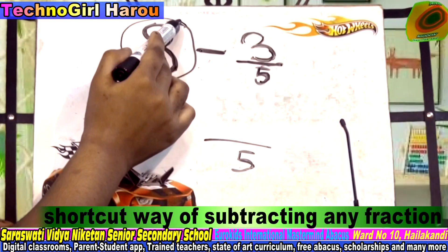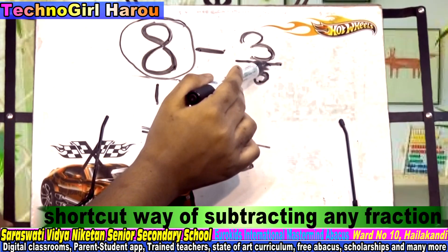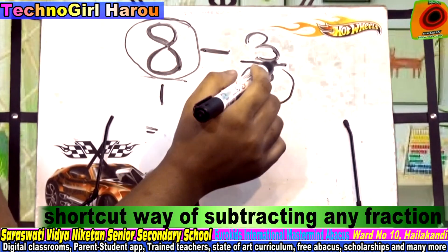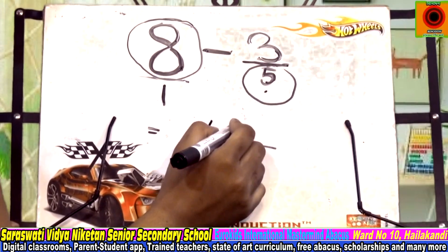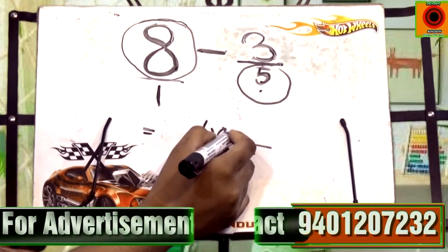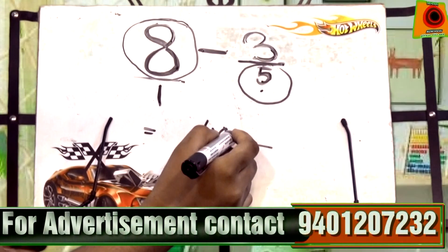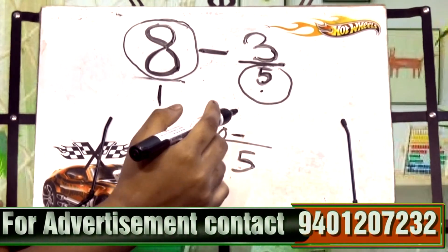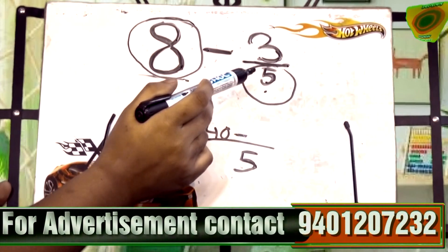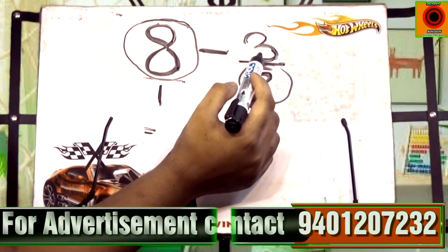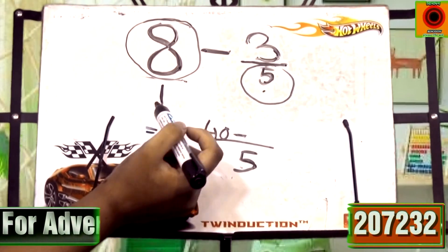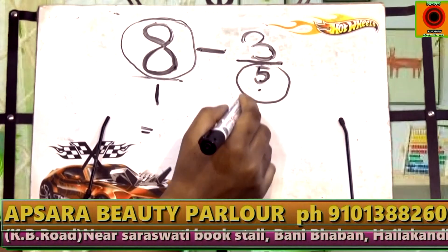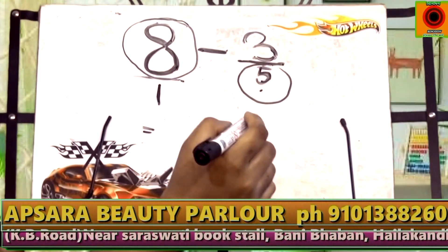Now we multiply the whole number with the denominator of the fraction. So 8 into 5 is 40, and give the minus sign, and now we multiply the numerator of the fraction with the denominator of the whole number, which is 3 into 1.